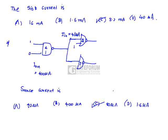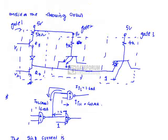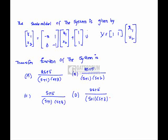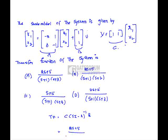The state model of the system is given by the following matrix. We need to find the transfer function. The transfer function is C(sI - A)^(-1)B, where this is A, this is B, and this is C. After substituting, we get the transfer function as (2s + 5) / [(s + 1)(s + 3)], which is option A. Now we need to find the unit step response of this system.